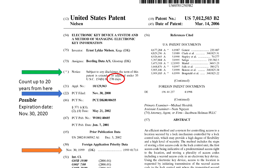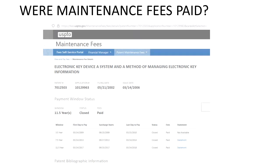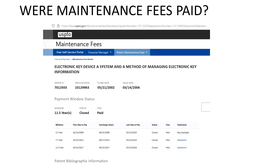So we're going to count 20 years from November 30th, 2000. We know a patent can last up to 20 years, so it could have expired on November 30th, 2020. First, we want to check if maintenance fees were paid — if they weren't, this patent will go out of force earlier than 20 years. Here we check the maintenance fees for this patent on the U.S. Patent Office website.